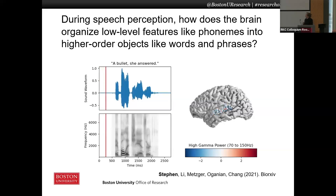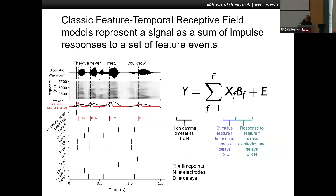Classically, you would use standard regression. Here's our standard regression model where we have event times on the left, and on the right the model shows our high-dimensional neural time series represented as a sum of responses to individual features. Each coefficient matrix is the response to a feature for all electrodes and delays.